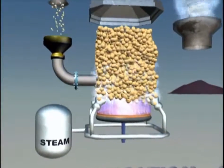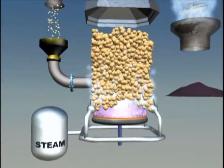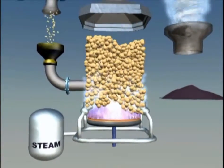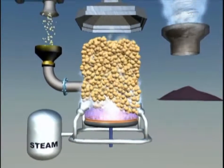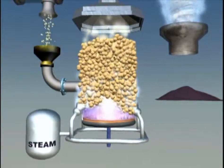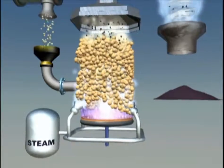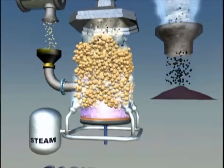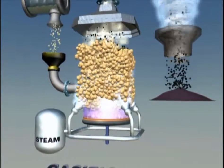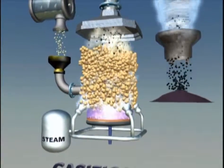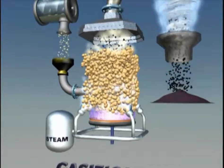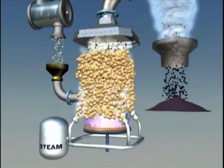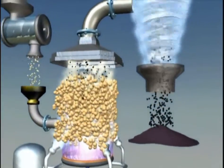In the gasifier, the biomass is broken down into vapors in a carefully controlled environment that typically contains oxygen and/or steam. The syngas produced is made up of carbon monoxide and hydrogen.